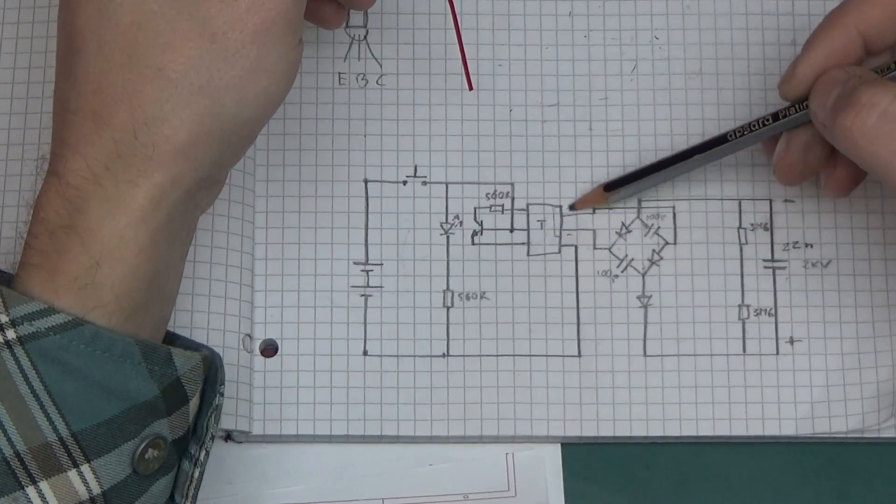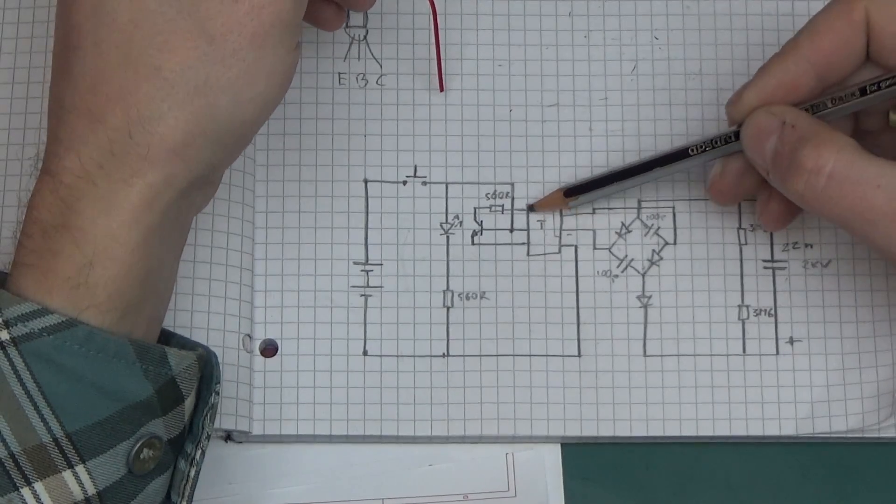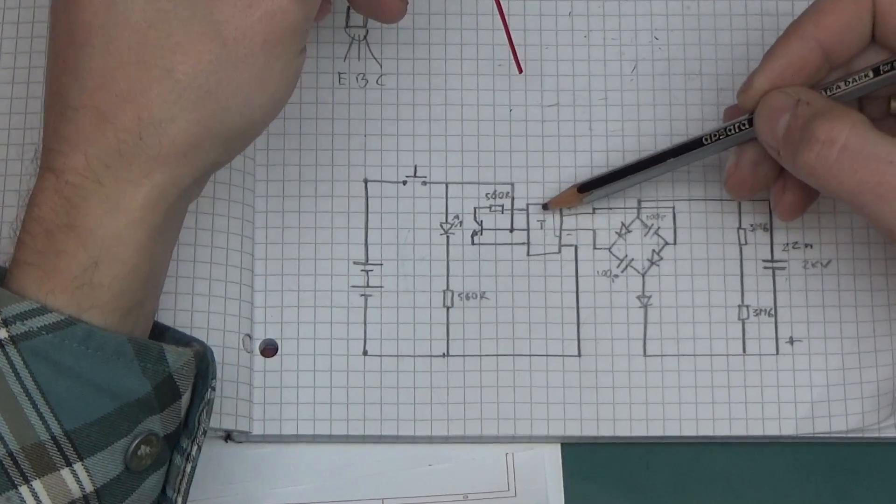This transistor here with the transformer, it will be a self-oscillating circuit. I will work out the coils in a moment what's happening in there. At least we'll try.